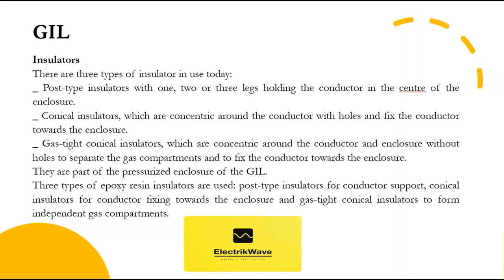For applications in GIL, the maximum temperature and the discharge tracking withstandability are the prime features, while mechanical strength and electric insulation are of minor importance. The mechanical strength for insulators in gas insulated switchgear is higher, where besides gas pressure, strong shock forces from circuit breakers and switches also need to be covered. There are three types of insulator in use today: post-type insulators with one, two, or three legs holding the conductor in the center; conical insulators which are concentric around the conductor with holes fixing the conductor towards the enclosure; and gas-tight conical insulators which are concentric around the conductor and enclosure without holes, to separate gas compartments and fix the conductor — these are part of the pressurized enclosure of the GIL.